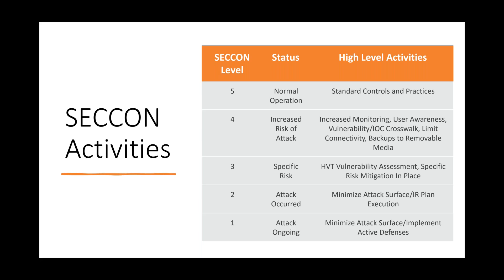Moving from five to three, you may need more resources — having three to four people on call, running an immediate backup of critical assets, and ensuring high-value targets are patched. At level one, you might block VPN access and put things in place to minimize the attack's effects. Ultimately it's up to you to decide what's right for your organization, but SECCON allows you to move in and out of states of readiness, communicate in a standard way, and pre-stage automated actions so everyone feels confident.